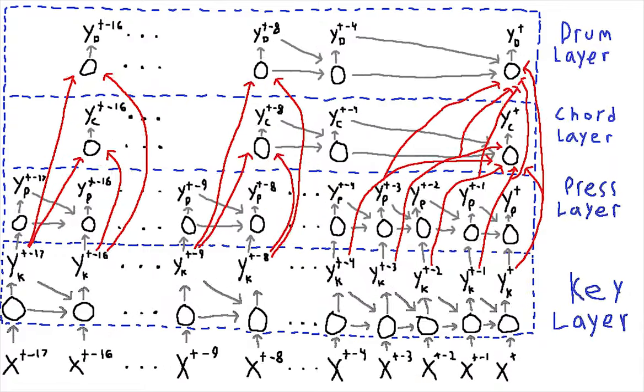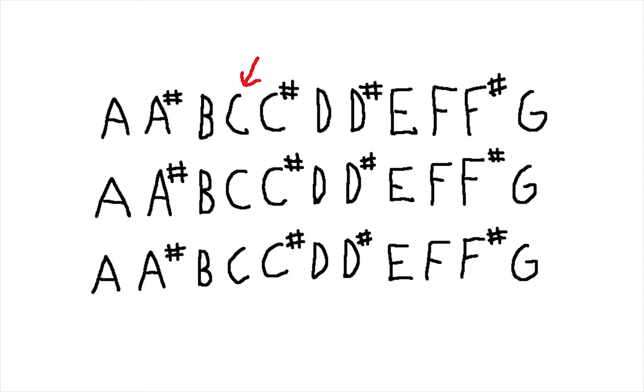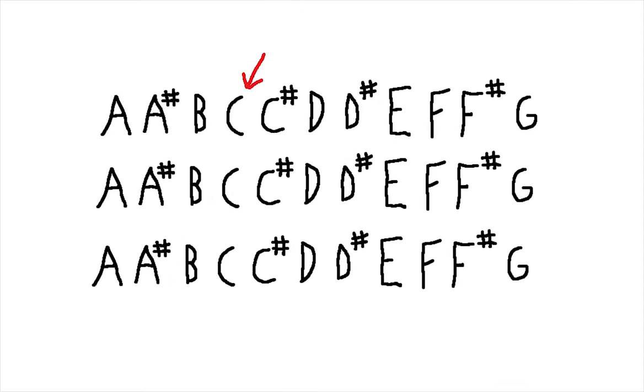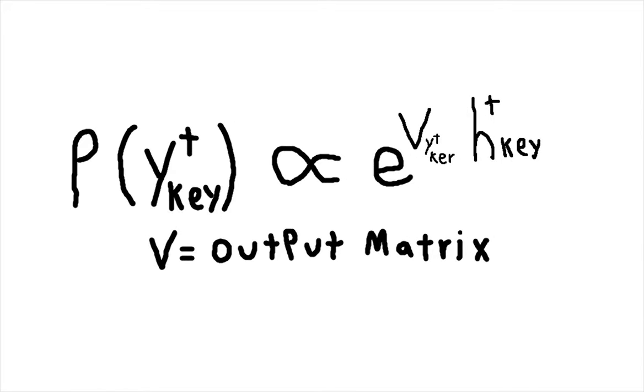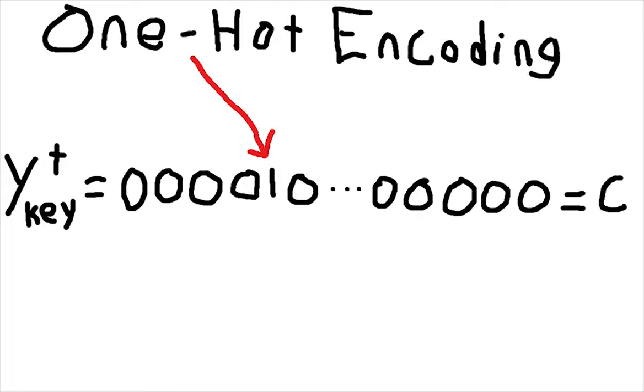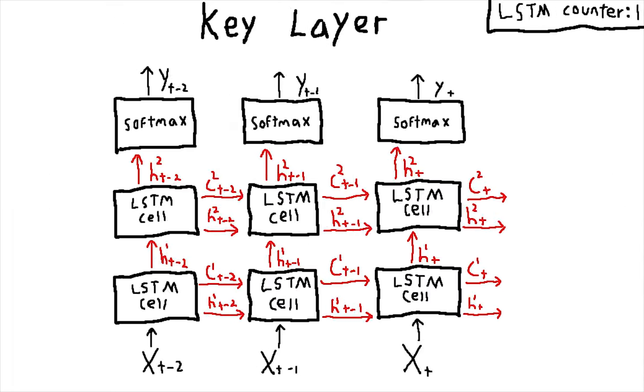The hierarchy works as follows. For generating a key, a two-layer LSTM is used to pick one of twelve notes over three octaves, or silence, based on a probability function generated from the previous key, as well as some auxiliary information, which is then one-hot encoded and pass along to the next key layer time step, as well as the press layer.